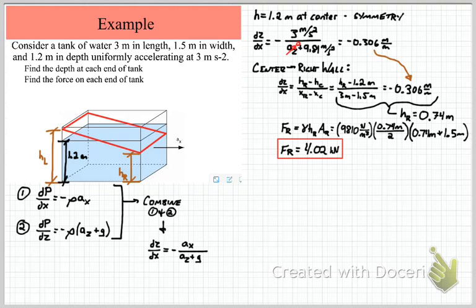So I calculate a resultant force acting on the right hand side of the tank of 4.02 kilonewtons. One thing to notice here is I've gone ahead and done the conversion from newtons to kilonewtons, just to make the numbers a little bit more tractable for this problem.